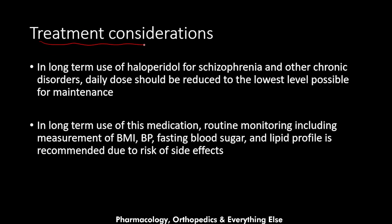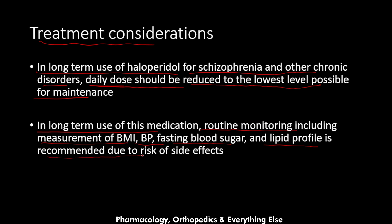Regarding treatment considerations, in long-term use of haloperidol for schizophrenia and other chronic disorders, the dose should be reduced to the lowest level possible for maintenance because of the many side effects that come with higher doses. Routine monitoring including measurement of BMI, blood pressure, fasting blood sugar, and lipid profile is recommended, because this medication can lead to weight gain, variations in blood pressure, and changes in blood sugar and lipid profile.